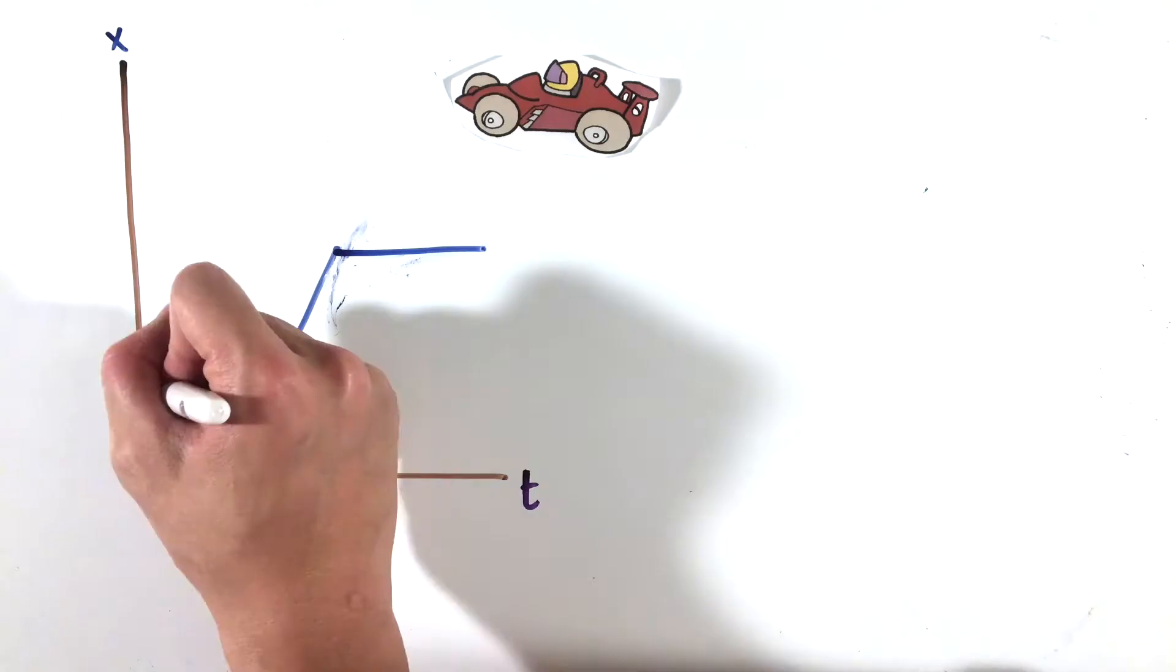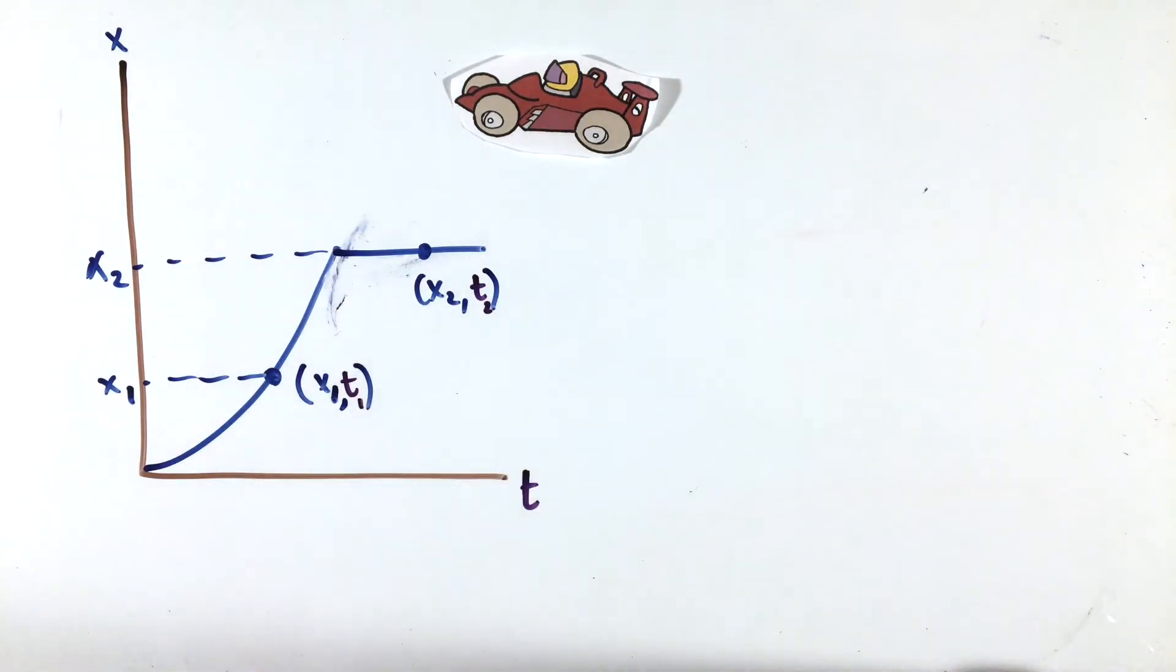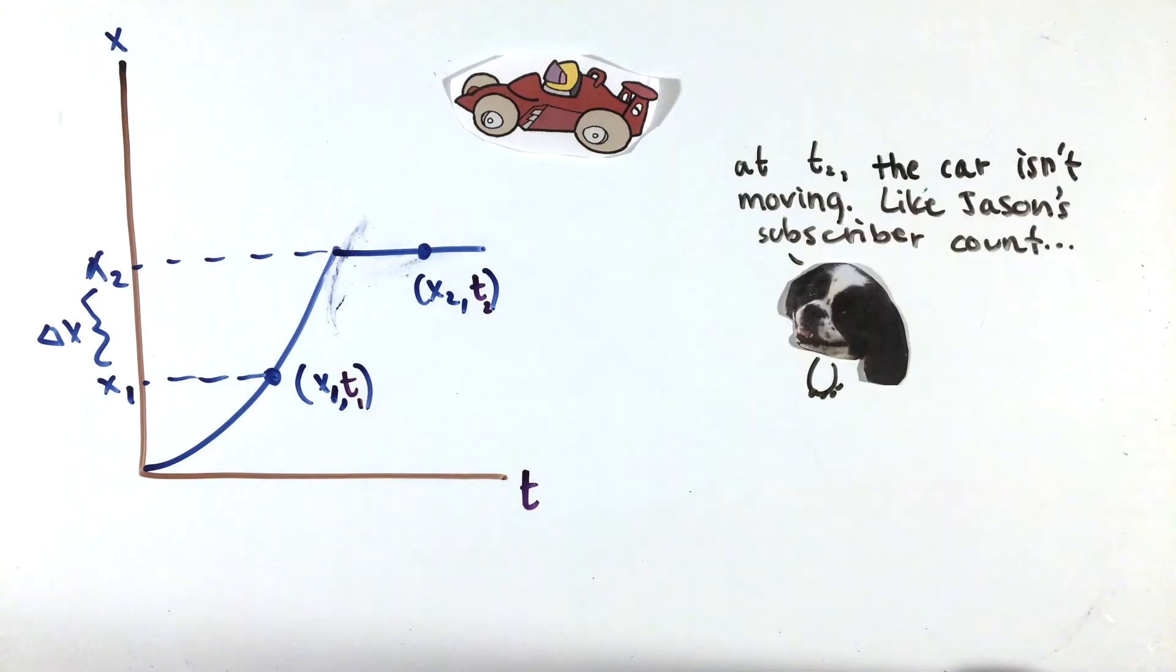Simply put, the position of the car at any time is just any point on the graph, with changes in position or displacement being represented by the difference in position values at any two times. This exact same thought process can be applied to velocity or acceleration graphs to get a general feel for an object's motion over a period of time.